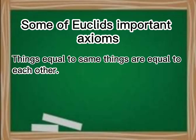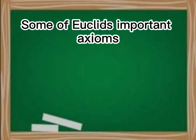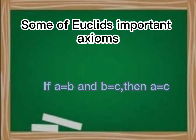And some of Euclid's important axioms: Things equal to the same things are equal to each other. If A is equal to B and B is equal to C, then A is equal to C.